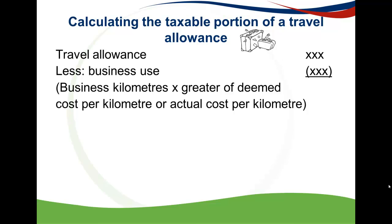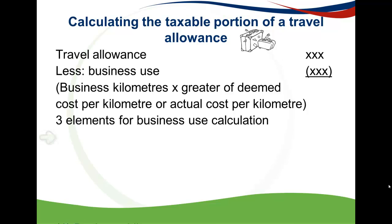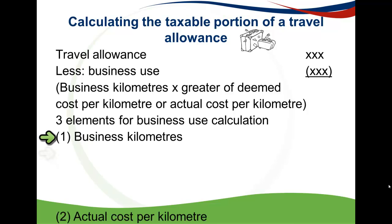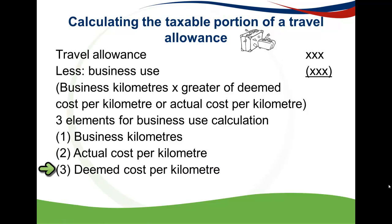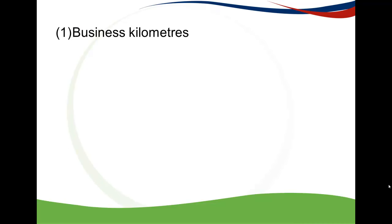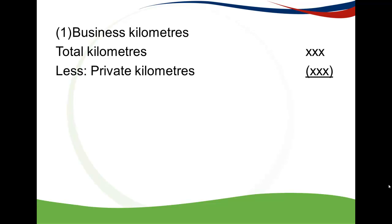We have three elements to calculate: business kilometres, actual cost per kilometre, and deemed cost per kilometre. For business kilometres, a question usually gives you total kilometres and private kilometres. Total kilometres less private kilometres equals business kilometres, or conversely, total kilometres less business kilometres equals private kilometres.